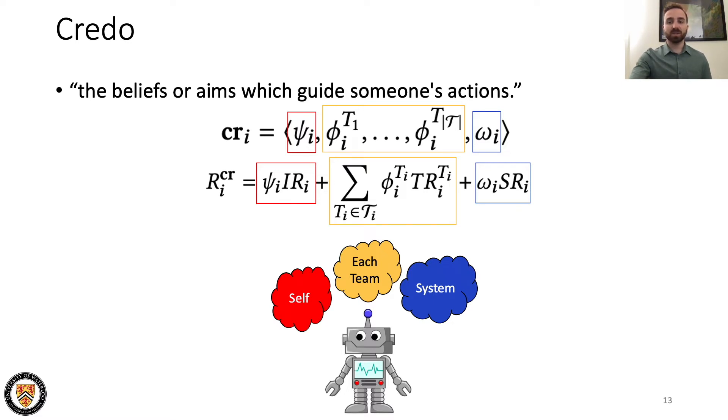Agents that only care about themselves are fully self-focused and agents that are entirely altruistic are fully system-focused. Teams provide a middle ground where agents can be team-focused and various combinations of credo parameters allow agents to partially optimize for any of these goals simultaneously.